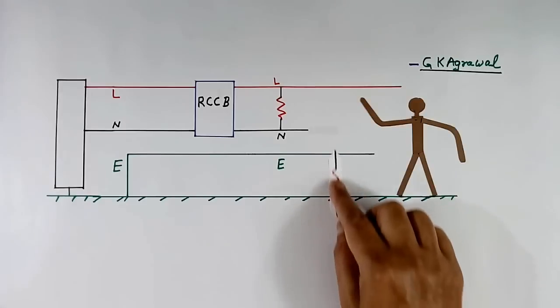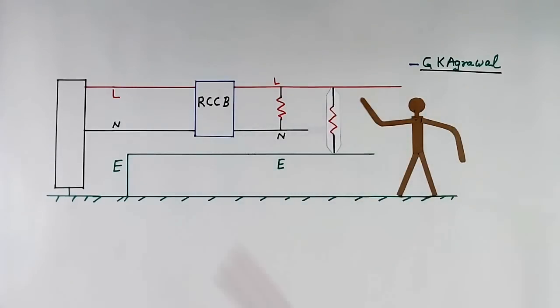Now suppose we connect load between line and earth. Main topic today. Then in this load, current will flow like this.